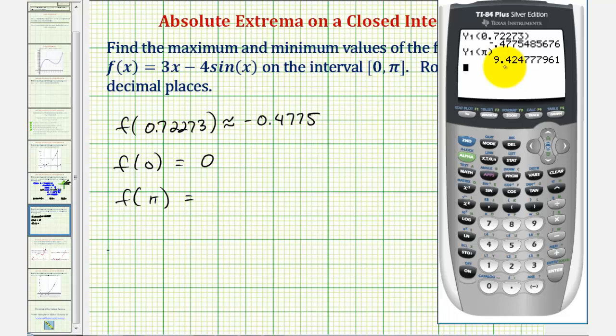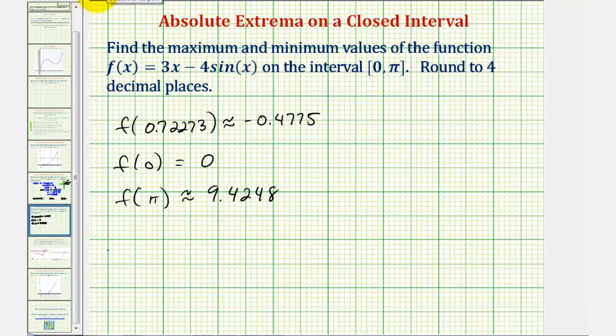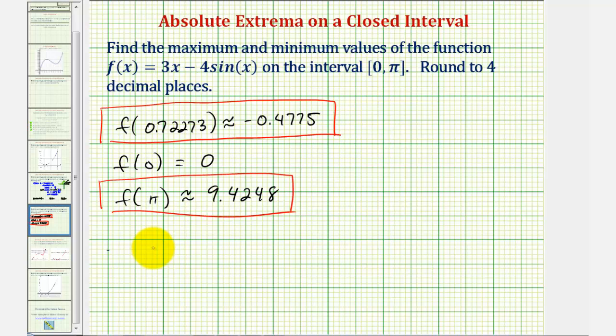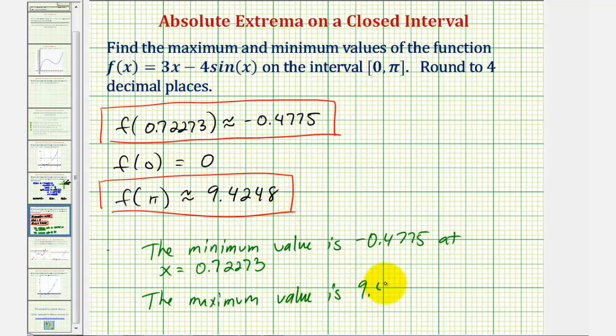So the function value is approximately 9.4248, which means the minimum function value, or the absolute minimum, is approximately -0.4775, and the absolute maximum, or maximum value is approximately 9.4248. So again, the absolute minimum function value, or minimum value, is approximately -0.4775, at x equals approximately 0.72273. And the absolute maximum, or the maximum value, is approximately 9.4248, at x equals pi radians.